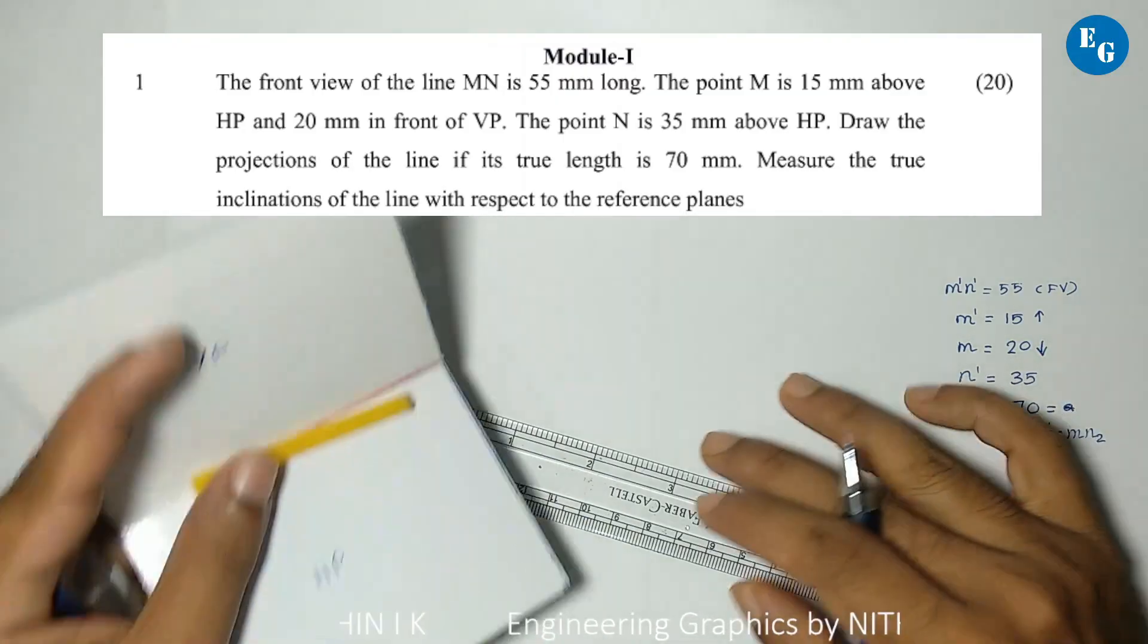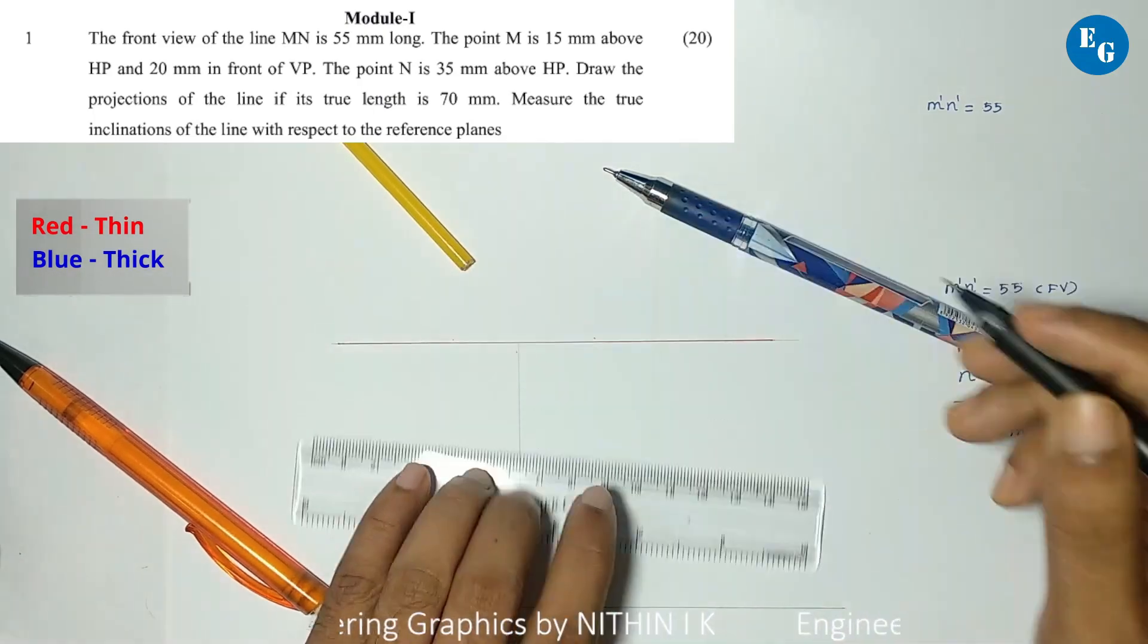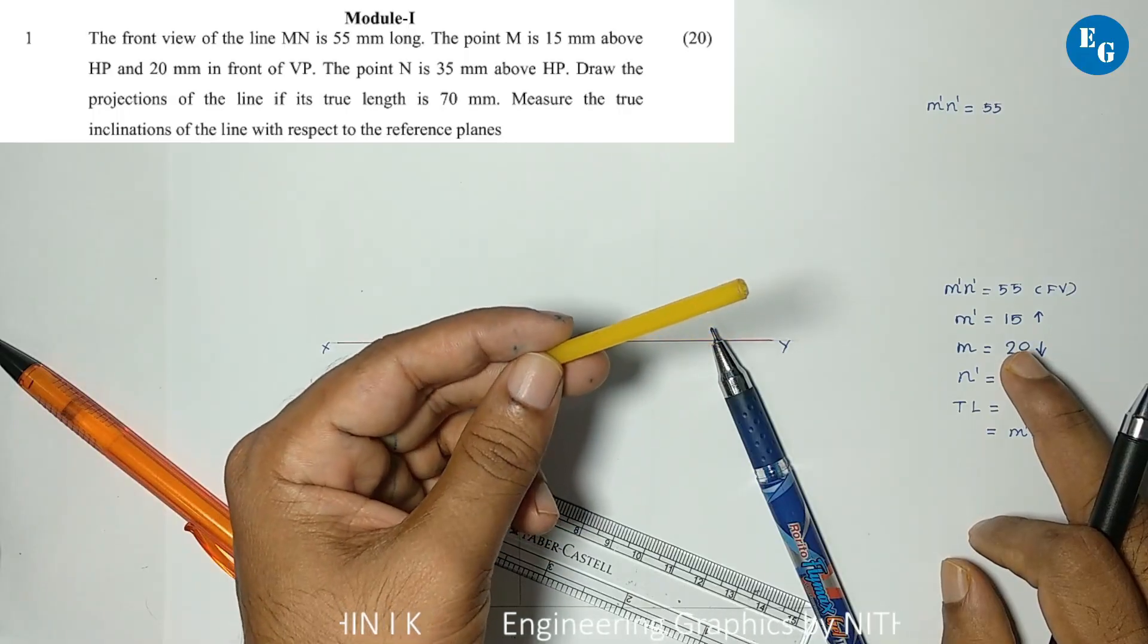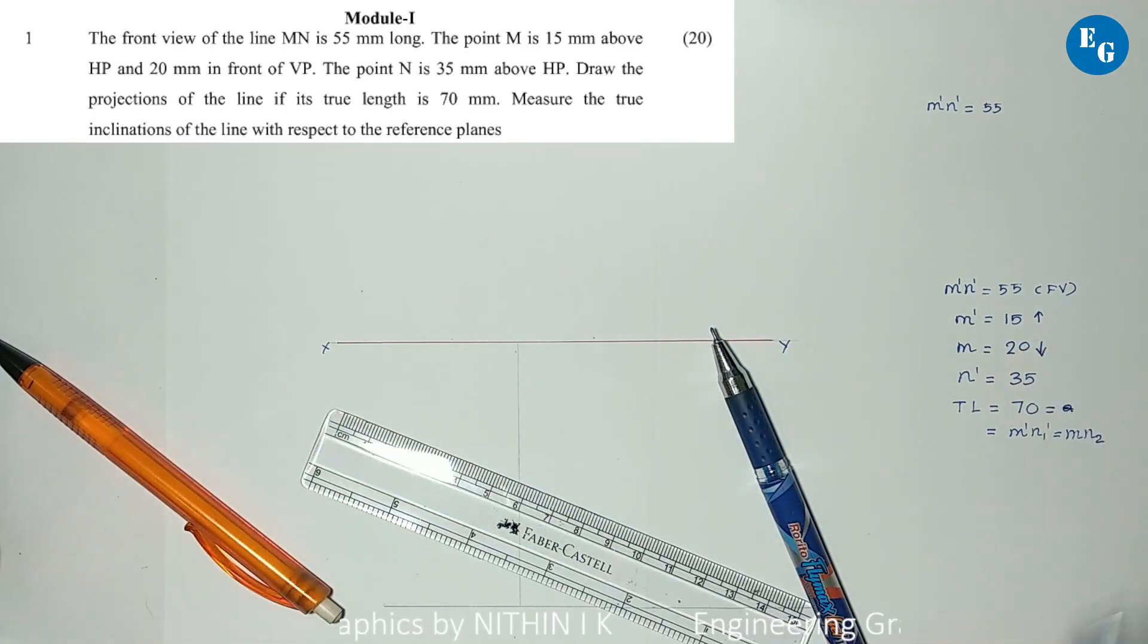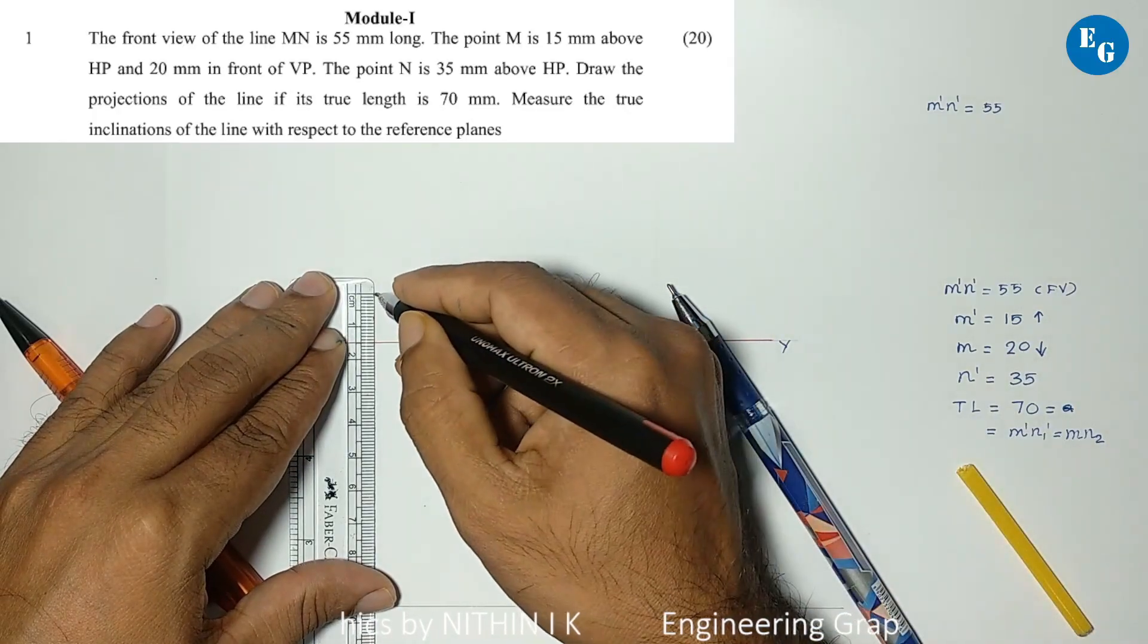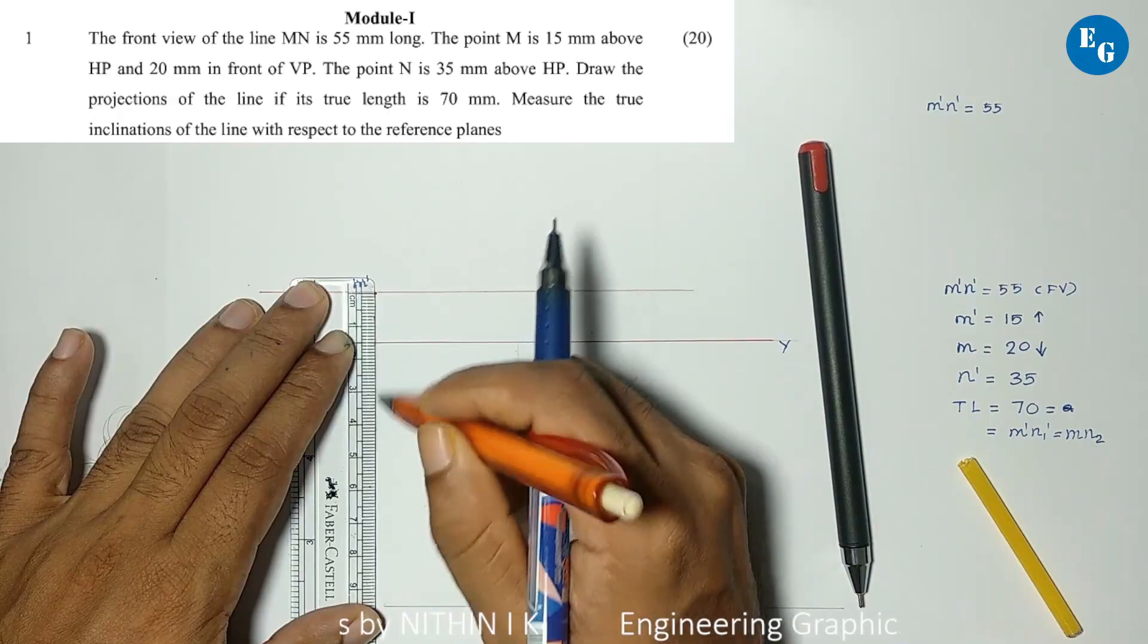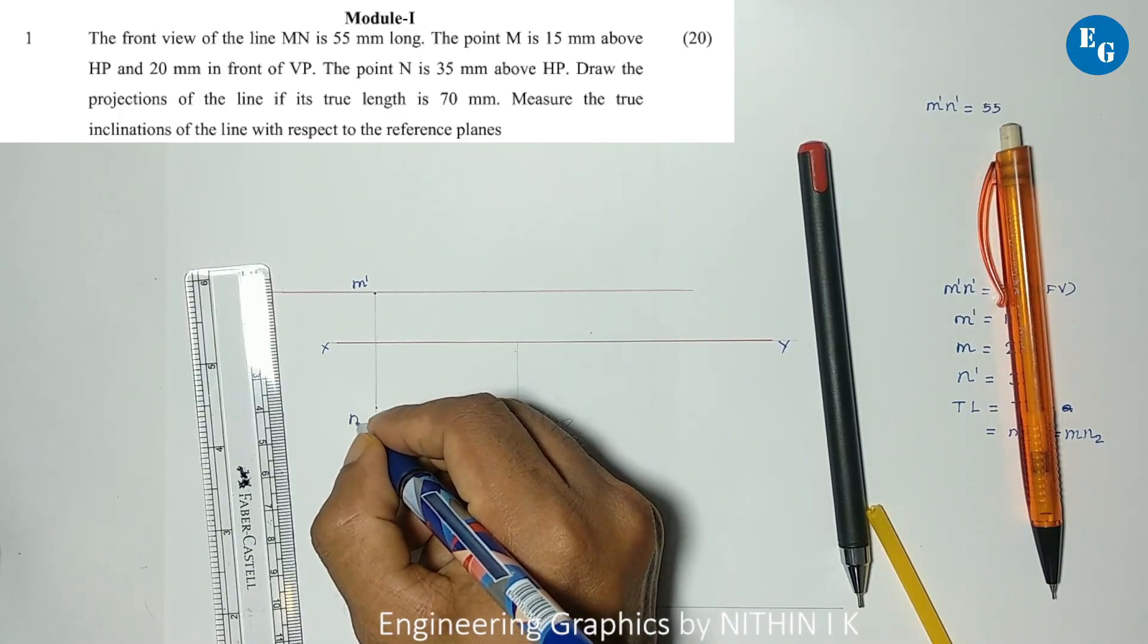First step is given data. Use a thin line for the reference line. The line has end points M and N. Locate the end points in front view and top view first. M dash is 15mm above, so locate M dash here. M in top view is 20mm in front of VP, meaning 20mm below XY line. M is located here.